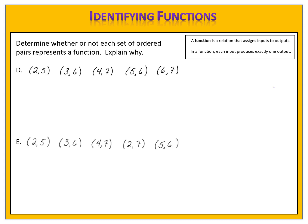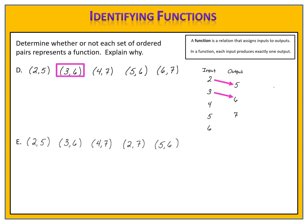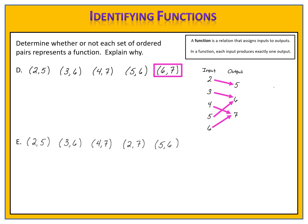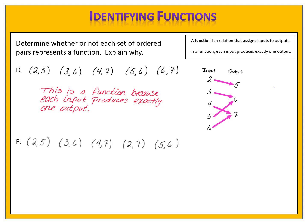Let's compare answers. In Exercise D, we have the inputs 2, 3, 4, 5, and 6, and the outputs 5, 6, and 7. The point (2,5) means input 2 with output 5. The point (3,6) means input 3 with output 6. The point (4,7) means input 4 with output 7. (5,6) means input 5 with output 6. And (6,7) means input 6 with output 7. Does each input produce exactly one output? Yes, it does, and so this relation is a function.